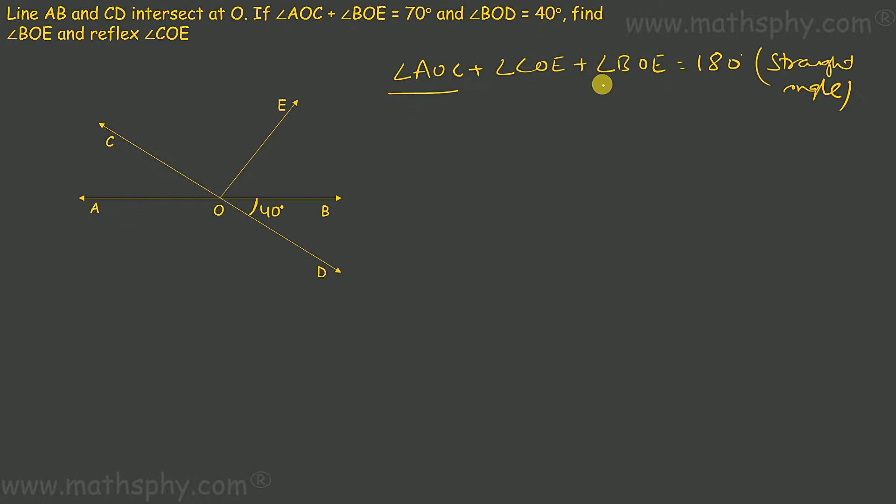AOC plus BOE, we know that's 70 degrees, so 70 plus angle COE equals 180. So angle COE would be 180 minus 70, which is 110. So this angle here is 110 degrees.